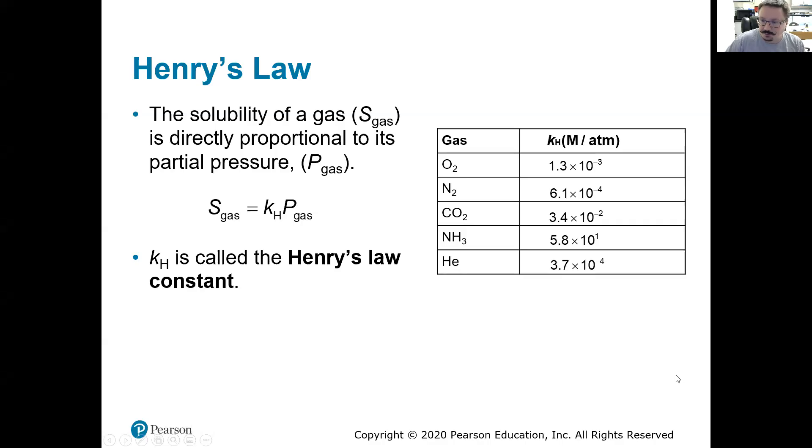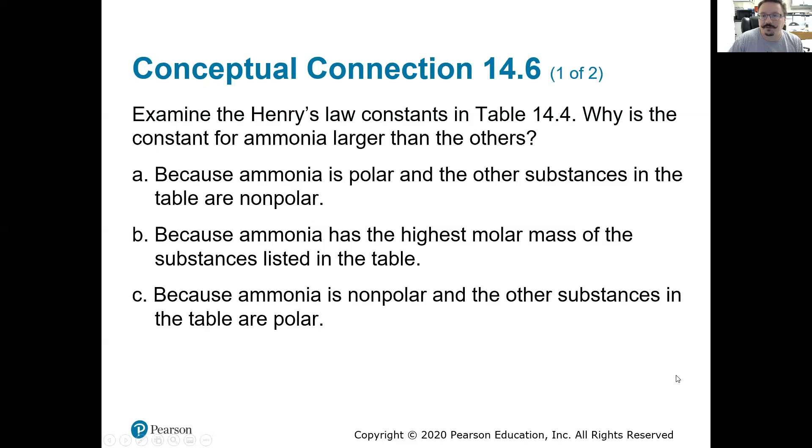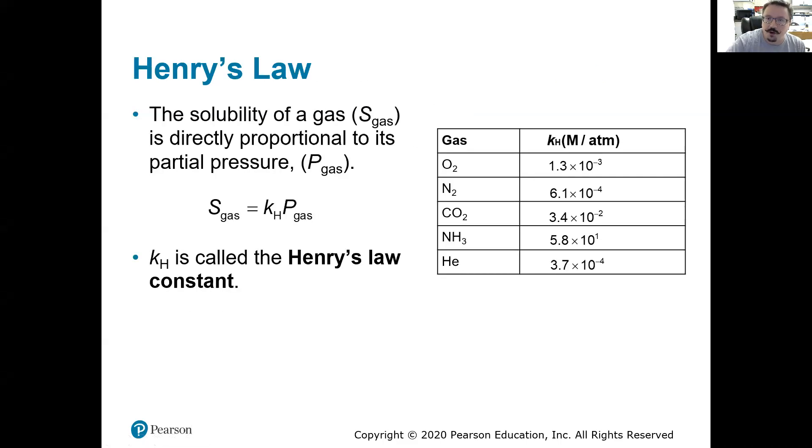Last thing then, conceptual question. Examine the Henry's law constants on table 14.4. Why is the constant for ammonia larger than the others? So there's our ammonia right there. You'll notice the constant is quite a bit larger. And here's everything else, O2, N2, CO2, and helium.